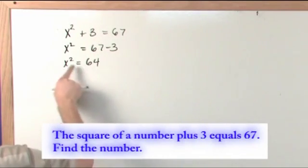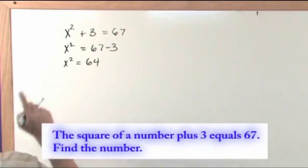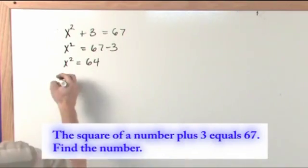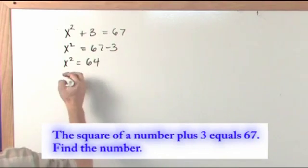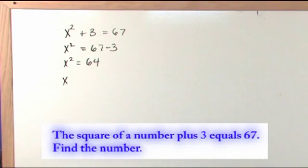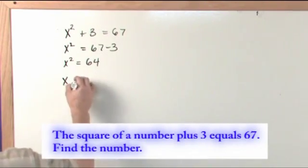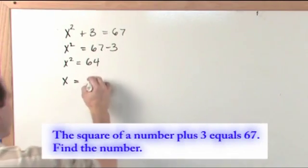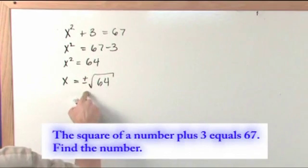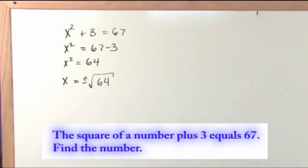In order to solve this, we're going to take the square root of both sides of this equation. The square root of a square is just simply itself. So we're going to have x on the left equal to square root of 64. But don't forget, anytime we put a square root like this to solve, we have to put plus or minus.